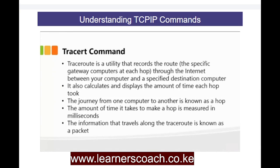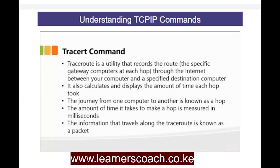Then we have the tracert command. This is a utility that records the actual route through the internet. If you connect from one computer to another, it shows how many hops it took — from one router to the next, eventually reaching the destination. It also calculates and displays the time each hop took. The journey from one computer to another is called a hop, measured in milliseconds. The data that travels through the trace route is known as a packet.